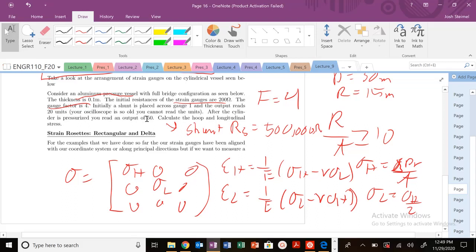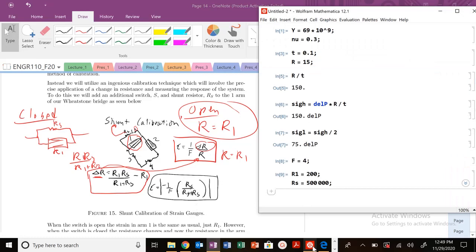So it says that initially, once I place the shunt, once I close the switch here, it outputs this 20 unit value. Let's go back to our notes. We know that we have an expression for once we close that switch, what is the equivalent strain?